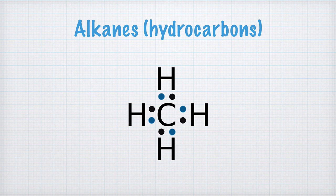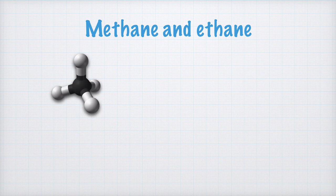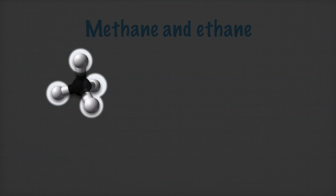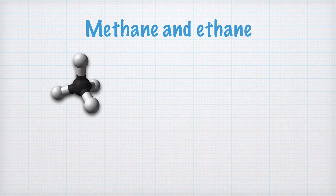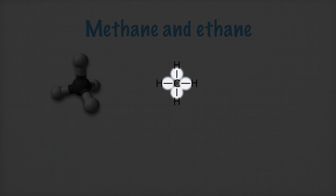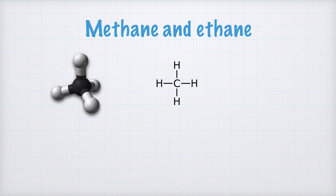Let's have a look at the two simplest alkanes, methane and ethane. This is a model of a methane molecule, where the central carbon atom is black and the four white hydrogen atoms are attached to the carbon atom with covalent bonds. The structural formula, which we draw here, is a translation of the model onto paper. Each covalent bond is shown by a line between the carbon and the hydrogen atoms. If we count all the atoms in the molecule, we get the molecular formula CH4.